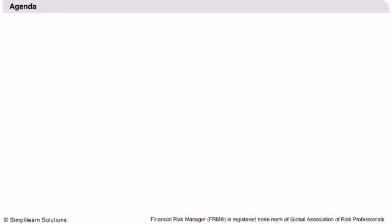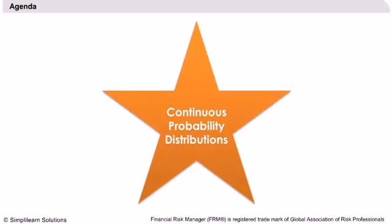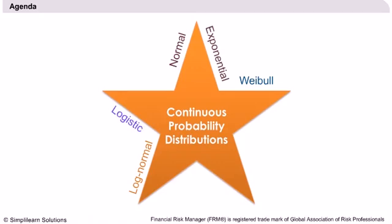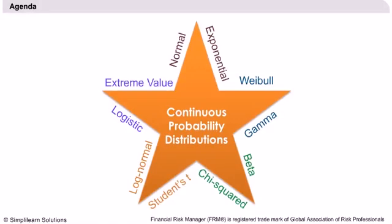Agenda. We will discuss some of the Continuous Probability Distributions such as Normal Distribution, Log Normal Distribution, Beta Distribution, Gamma Distribution, Weibull Distribution, Exponential Distribution, Logistic Distribution, T Distribution, Chi-Squared Distribution and Extreme Value Distribution. GARP requires basic understanding of these distributions and their properties and students are advised not to go into too much detail in terms of analytical interpretation and calculations.